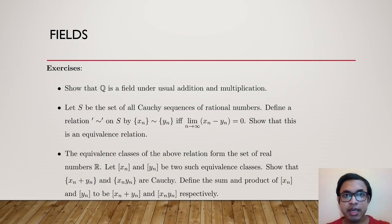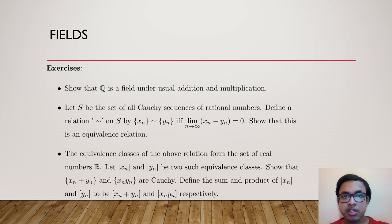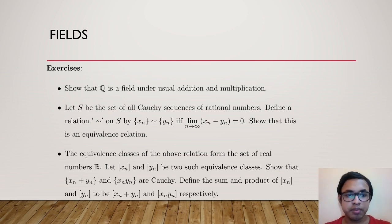Now we come to some exercises. First, show that the set of rational numbers — numbers of the form p/q where p and q are integers, q is non-zero, and the GCD of p and q is 1 — is a field under the usual laws of addition and multiplication.